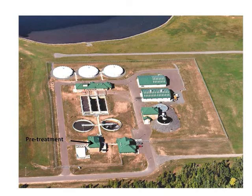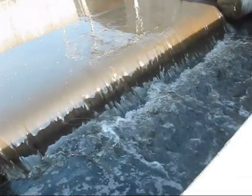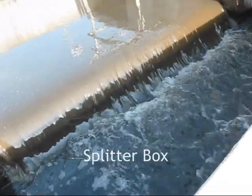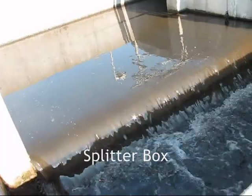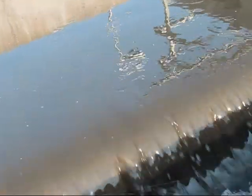Our tour of the treatment facility typically begins with a stop in the pre-treatment room where bar screens and racks are used to remove materials coming into the plant, and then we move on to the splitter box where the students get their first good look at raw wastewater and where the influent stream is split to the two sides of the plant.